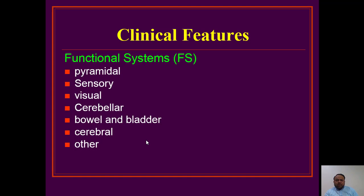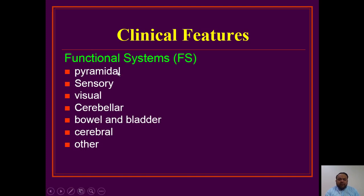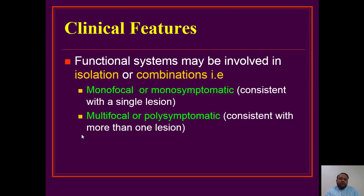The nervous system is comprised of seven different functional systems: pyramidal, sensory, visual, cerebellar, bowel and bladder, and cerebral. All systems are affected in multiple sclerosis.